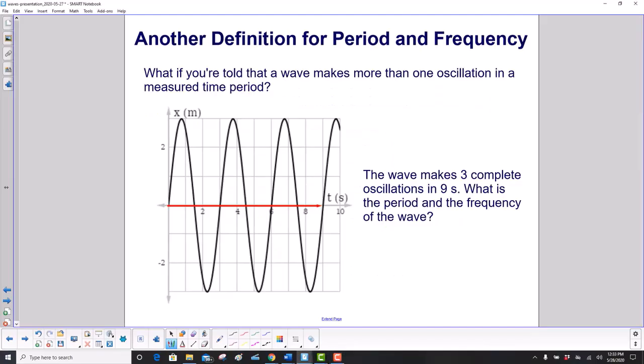What if you're told that a wave makes more than one oscillation in a measured time period? For example, this wave makes three complete oscillations in nine seconds. Here's our nine-second mark. So we go one, two, three oscillations. What is the period and the frequency of the wave?